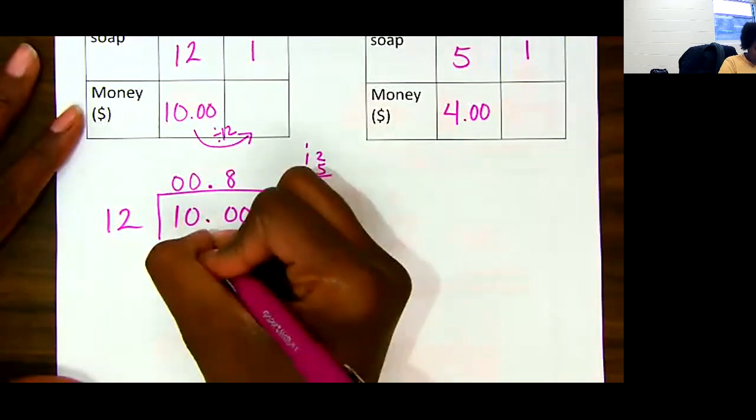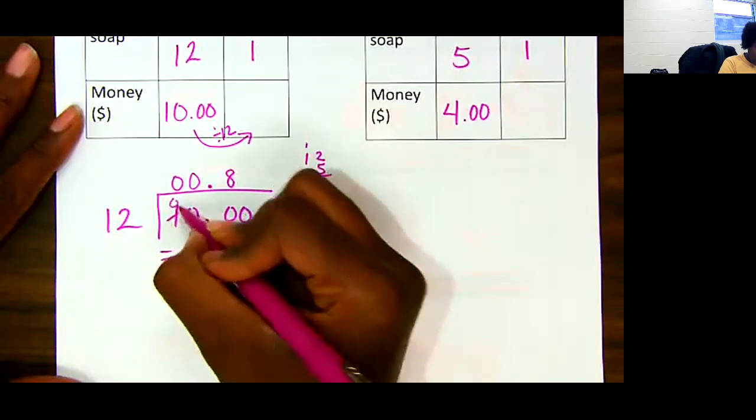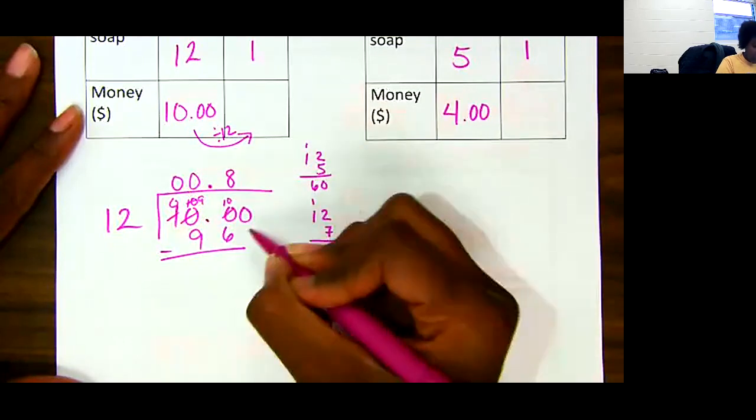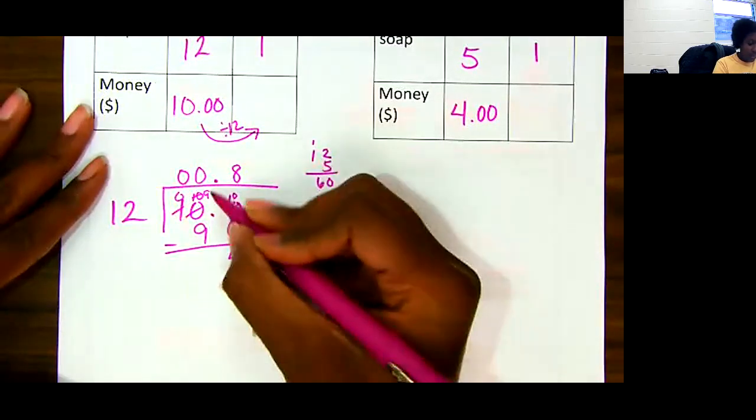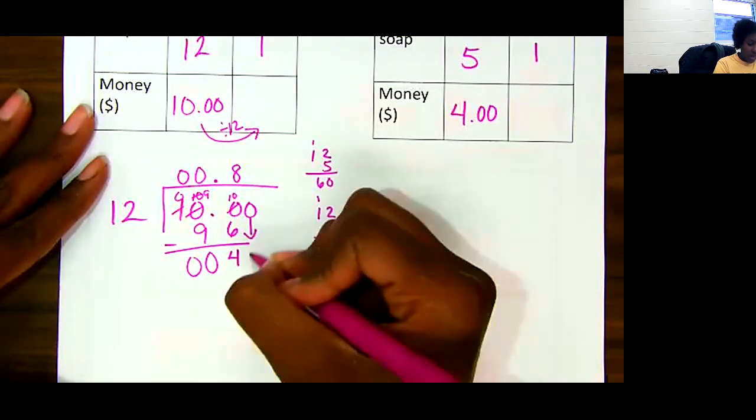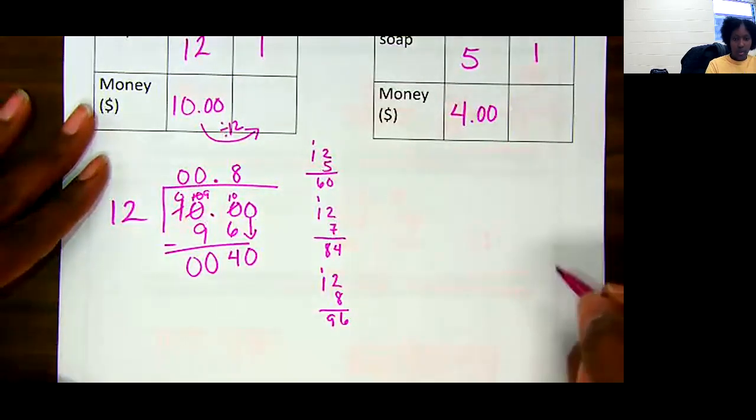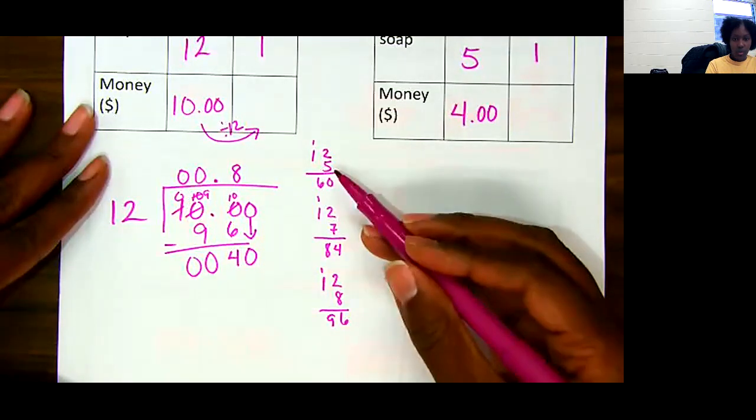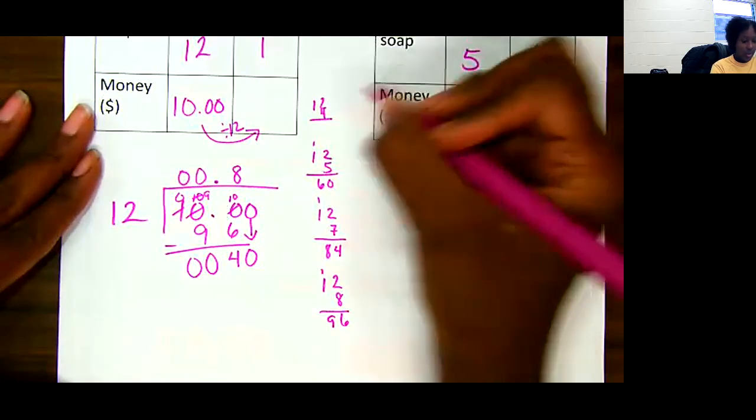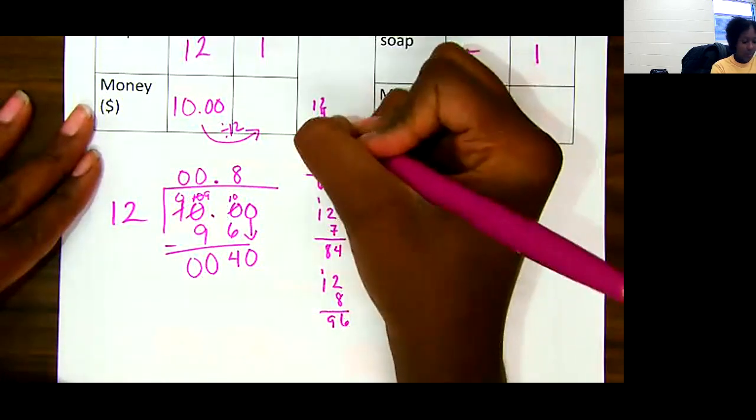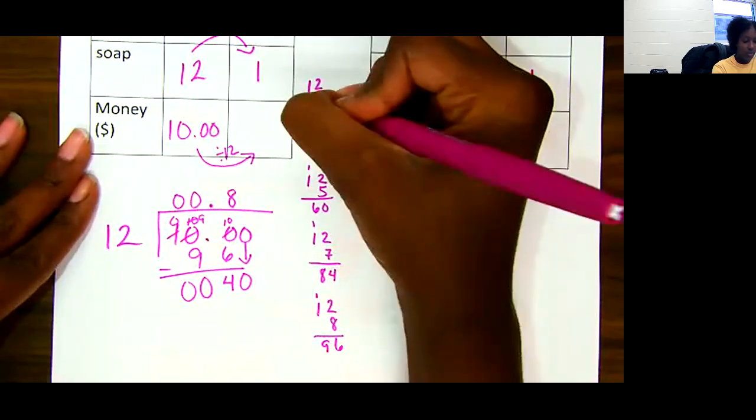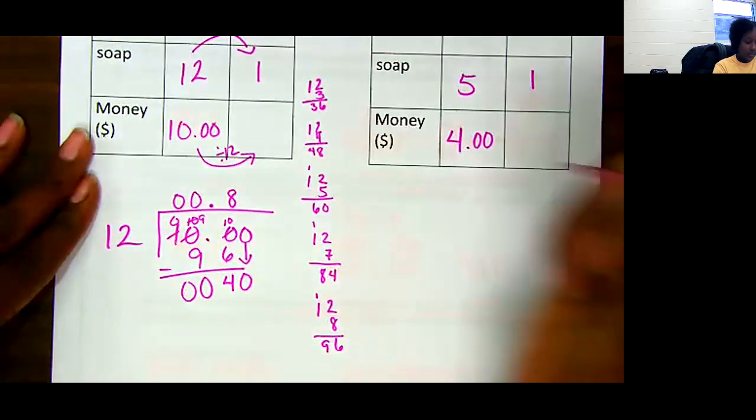We're going to subtract 96. Got to borrow. So 6, 7, 8, 9, 10. We got 4 here. 9 from 9 is 0, and then we have 0. Bring down our next one. We have 40. If I go back to my scratch work, 12 times 5 gave me 60, that's too much. So let's do 12 times 4: 8 and 4 times 1 is 48. That's too much. 12 times 3 is 36. So we're going to use 3.